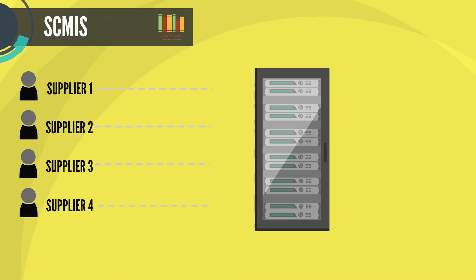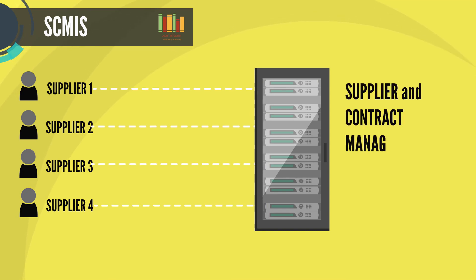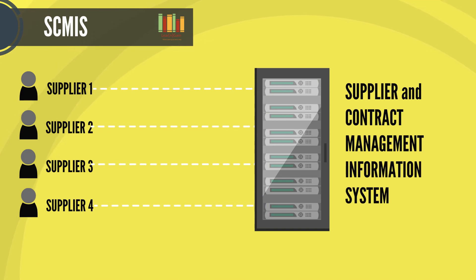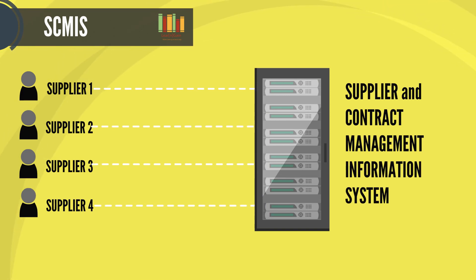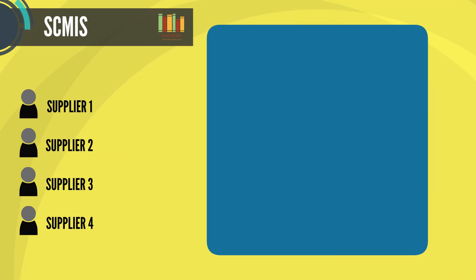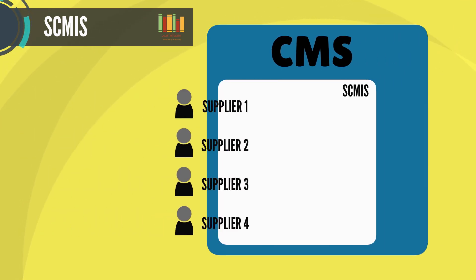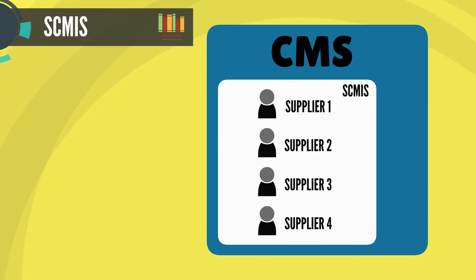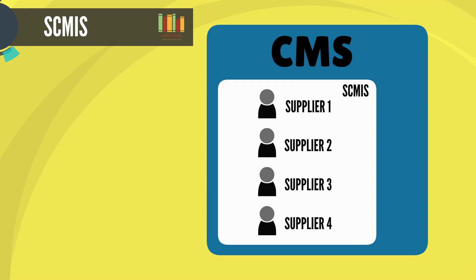All supplier related information and data are maintained within the Supplier and Contract Management Information System, or SCMIS. To achieve consistency and effectiveness of supplier policy information, SCMIS should be implemented. It should ideally be an integral part of a comprehensive CMS.